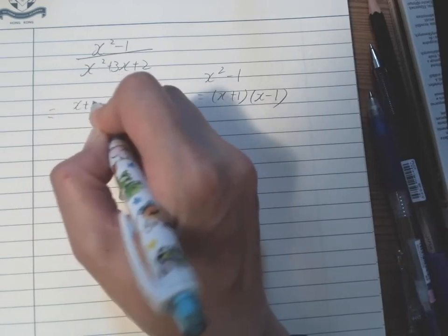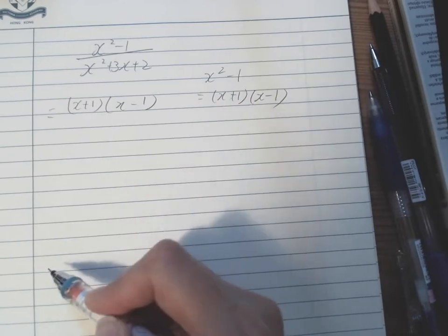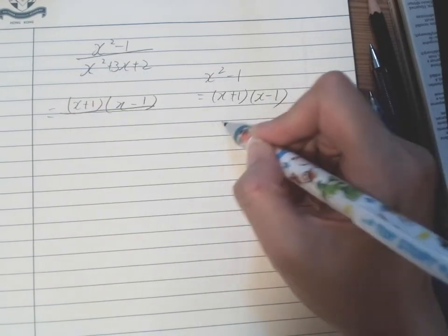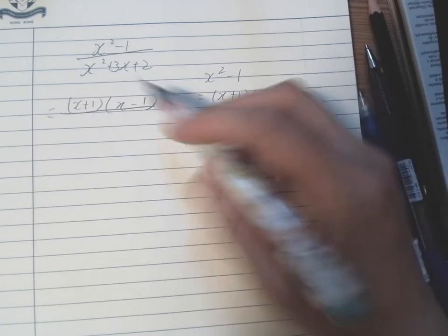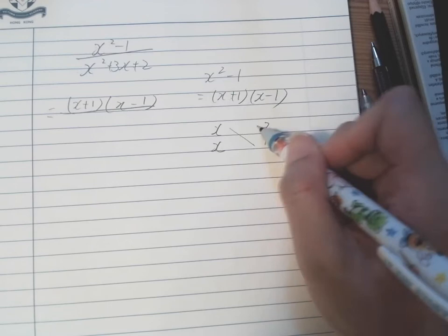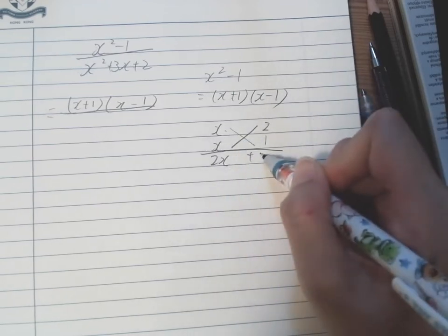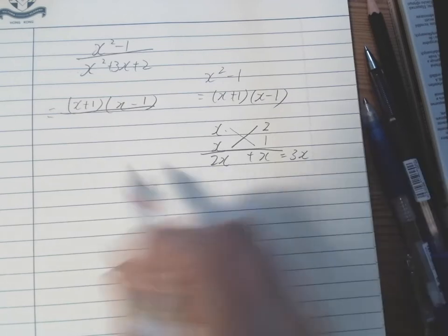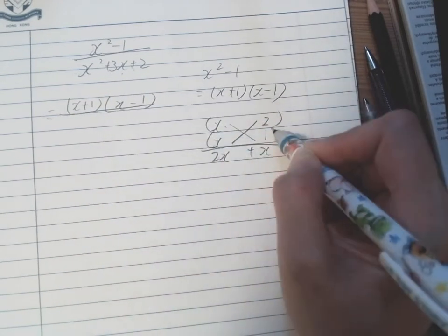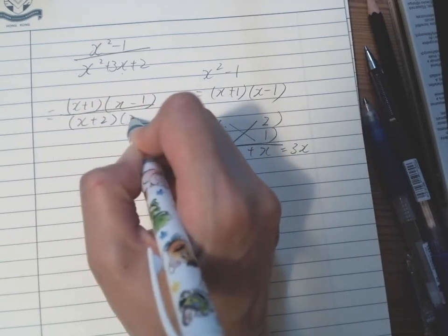All right, now we work with the denominator using the cross method. So we have x times x becomes x squared, and then 2 times 1 becomes 2. Cross multiply it to see if it works: 2x plus x equals 3x, which is the same as the middle term. This means we are able to factor the expression. So we have (x plus 2)(x plus 1).